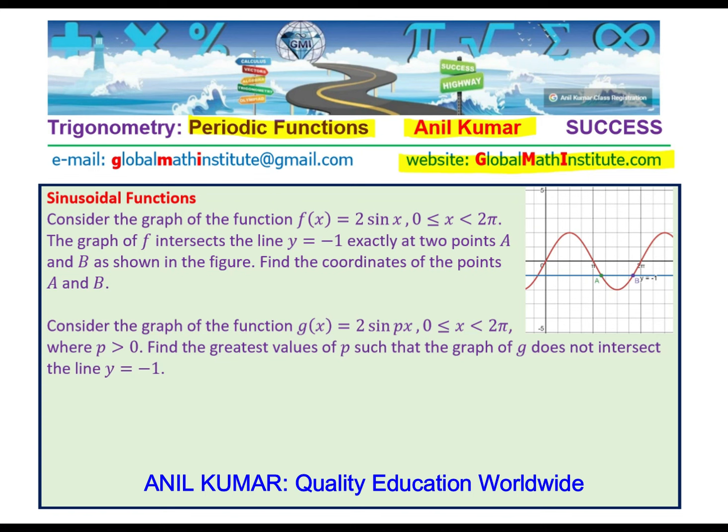The problem here is, consider the graph of function f(x) = 2 sin x, where x is between 0 to 2π, means we are considering only this part of the graph. The function f intersects the line y = -1 exactly at two points A and B.